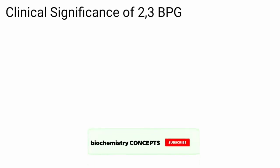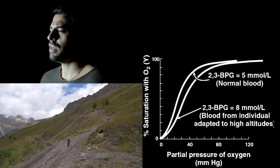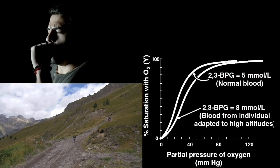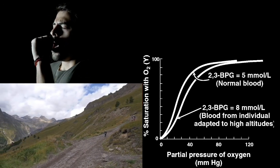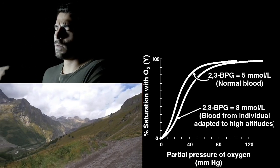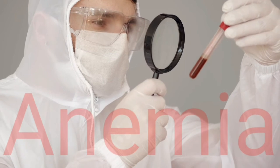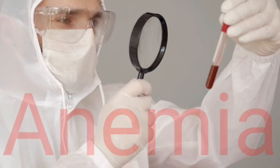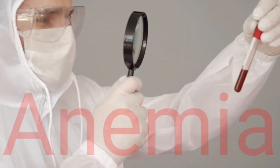Clinical significance of 2,3-BPG: In response to chronic hypoxia observed in emphysema or at high altitudes, the concentration of 2,3-BPG increases in RBCs. Elevated 2,3-BPG levels lower the oxygen affinity of hemoglobin, permitting greater unloading of oxygen in the capillaries of the tissues. Intracellular levels of 2,3-BPG are also elevated in chronic anemia to supply as much oxygen as possible to the tissues, despite the low hemoglobin levels.